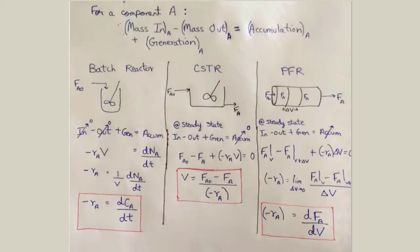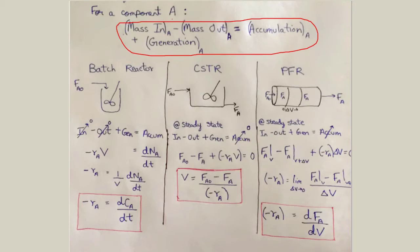Let's begin with the first equation, which is the most paramount equation when it comes to a reaction system. For a component A present in the reactor, we have the mass that enters the reaction system minus the mass that exits the reactor system plus the amount of A generated within the reactor system, which is equal to the total accumulation of component A.